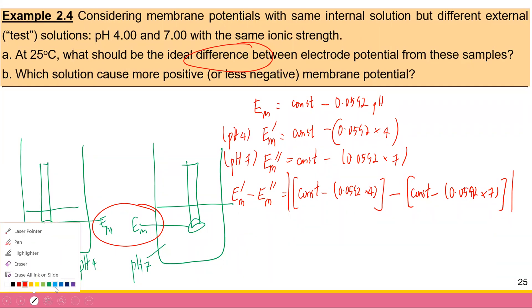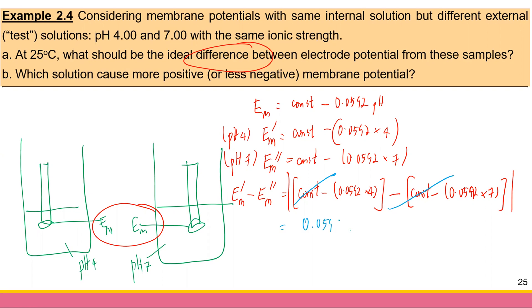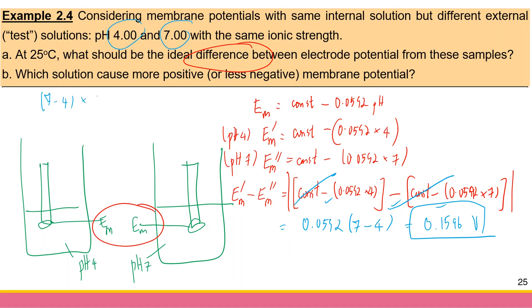The constant terms cancel each other, and the 0.0592 coefficient gives: 0.0592 × (7 − 4) = 0.0592 × 3 ≈ 0.1776 V. The shortcut is simply to subtract the two pH values and multiply by 0.0592. The longer derivation shows exactly how that shortcut comes about.